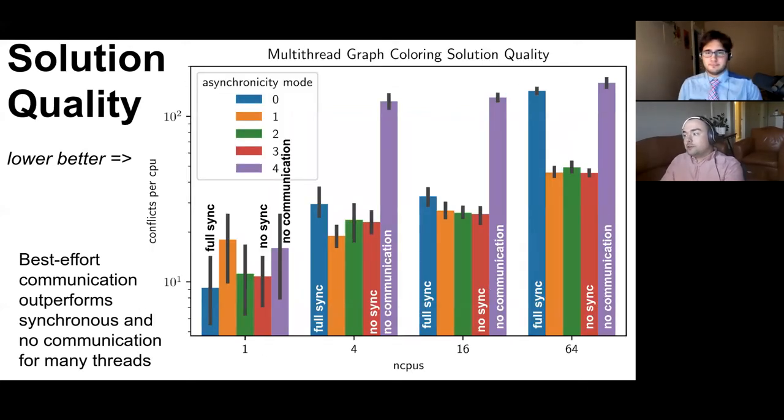We can also see at 64 threads significantly better solution quality of the fully asynchronous best effort model compared to the synchronous perfect communication model.